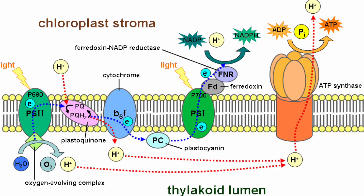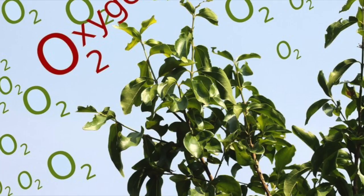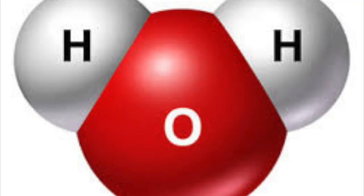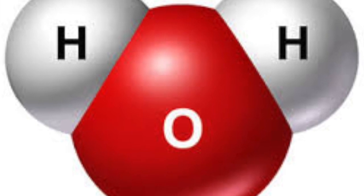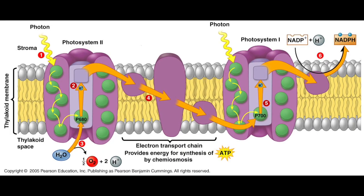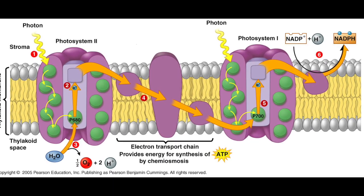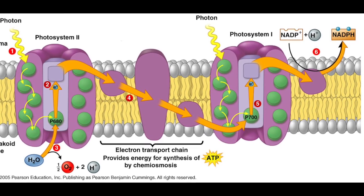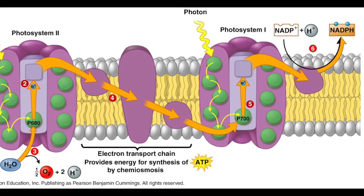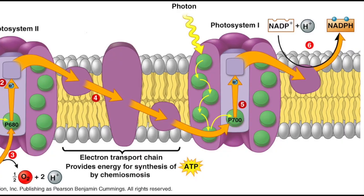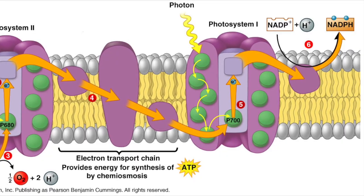Take it to the light reactions. Light hits water in the stroma, gives off O2 as a byproduct. The excited electrons from H2O are released to photosystem 2, use the ETC to photosystem 1, which creates a gradient of H+ ions across the thylakoid — chemiosmosis makes ATP and NADPH.